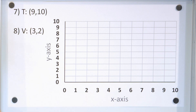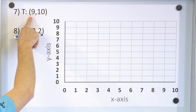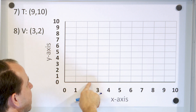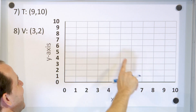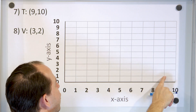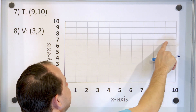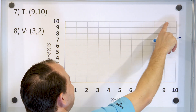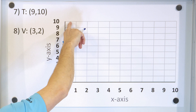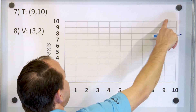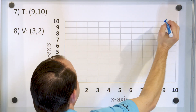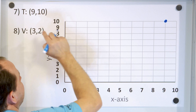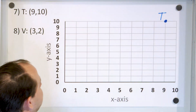Here we have point T at 9 comma 10. X equals 9, so we go over to 9 first, then we go up 10 units: 1, 2, 3, 4, 5, 6, 7, 8, 9, 10 for y. Notice we're reading 10 for y and 9 for x, so the point is right up there. The label is point T.